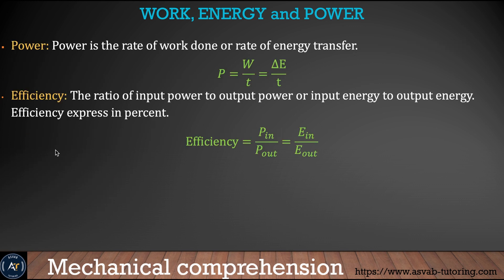The next thing we learn is power and efficiency. Power is the rate of work done or rate of energy transfer, so power equals work done per unit time. Efficiency is how efficiently a certain work is done — it is the ratio of power out to power in, or energy out to energy in. Remember these two formulas and write them down in your notebook.